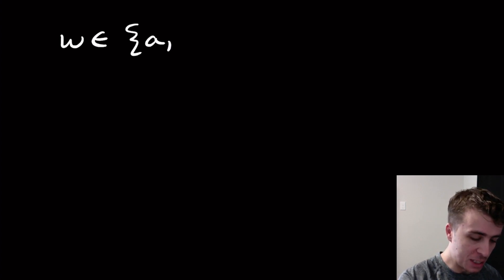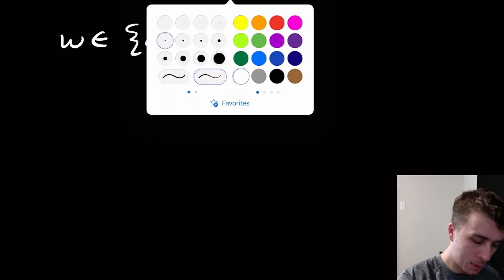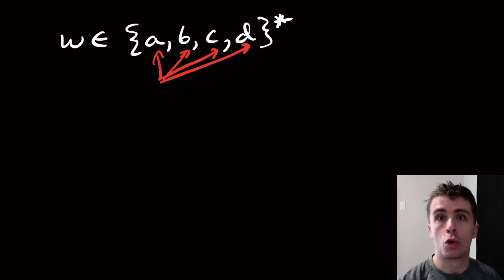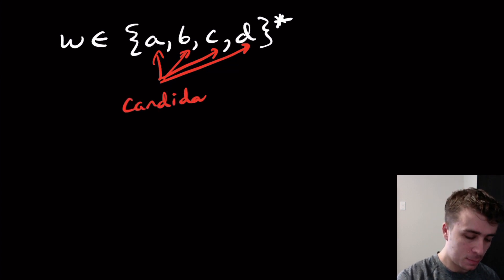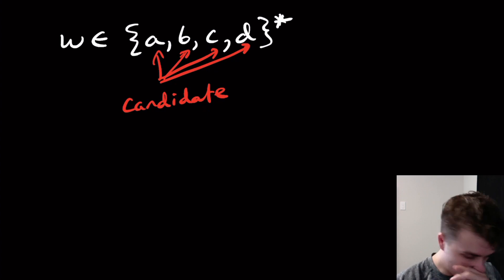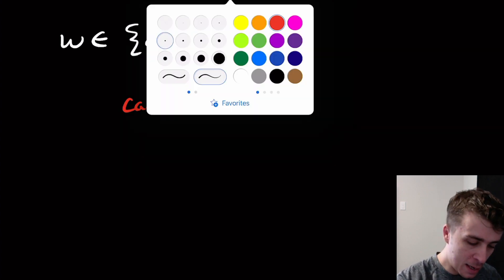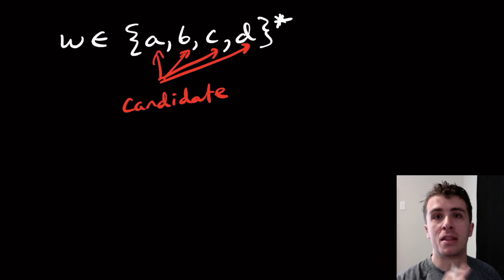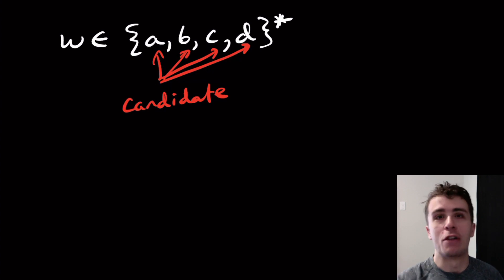So what's the setup here? We're going to have a string W in the set {A, B, C, D}*. Each of these four characters is going to correspond to a candidate in this election — so we've got four candidates. The string W is going to represent the votes of each of the citizens in Theriopolis.